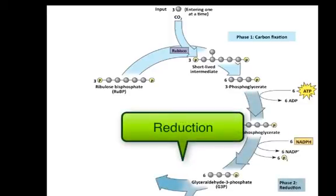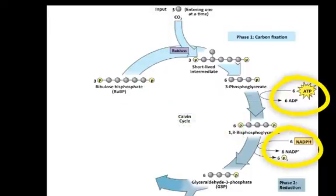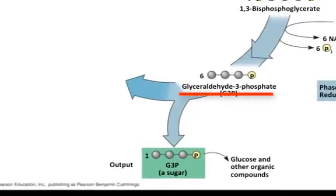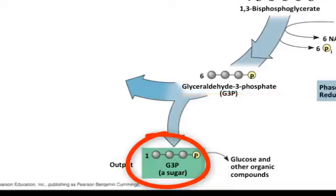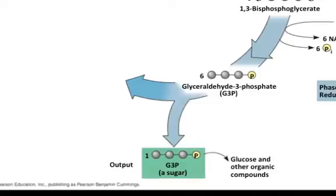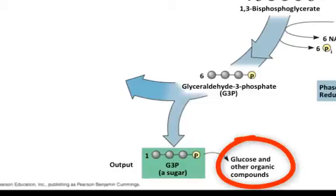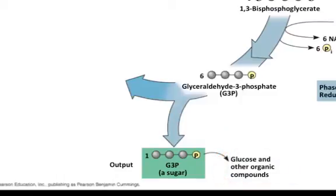Next is the reduction phase. ATP phosphorylizes these compounds and NADPH reduces them by giving them electrons. The 3-carbon products are now reduced and have more energy than before. The new compound is called glyceraldehyde 3-phosphate, or G3P. G3P is the payoff molecule, meaning that two of these molecules can become the monosaccharide glucose, fructose, or galactose. At this point, however, it would take three turns of the cycle to produce one G3P.